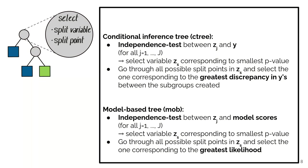And we do an independence test between this zj and the model scores, which essentially measures whether there's any instabilities in the parameters of the model. And then again we select the split variable corresponding to the smallest p-value. And then in the second step we go through all possible split points in our selected split variable.